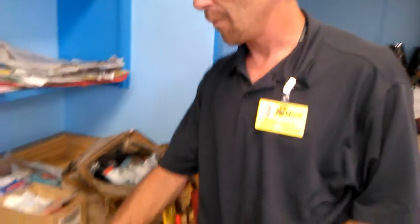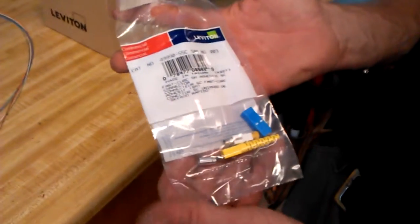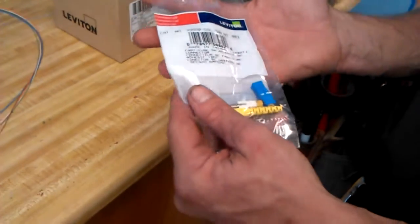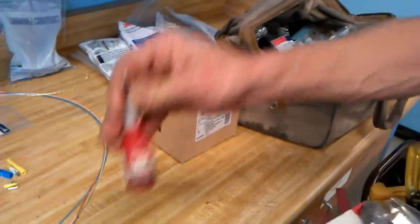Alright, so the next step here is terminating the fiber optics. What we're going to be working with here is a Levington product that I showed up with on the job site. This is an anaerobic type connector, which means it's a binary type glue. Here's the glue, the Loctite 680 that we're going to be using.